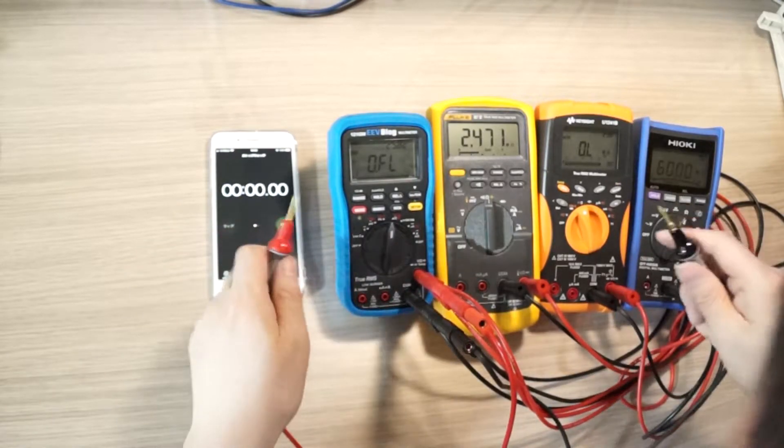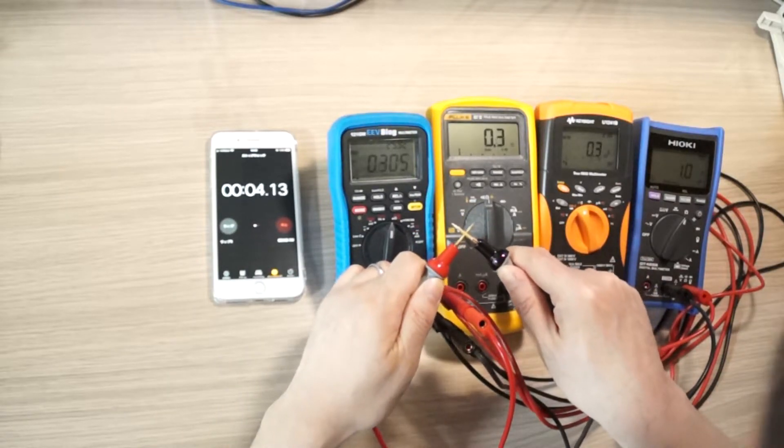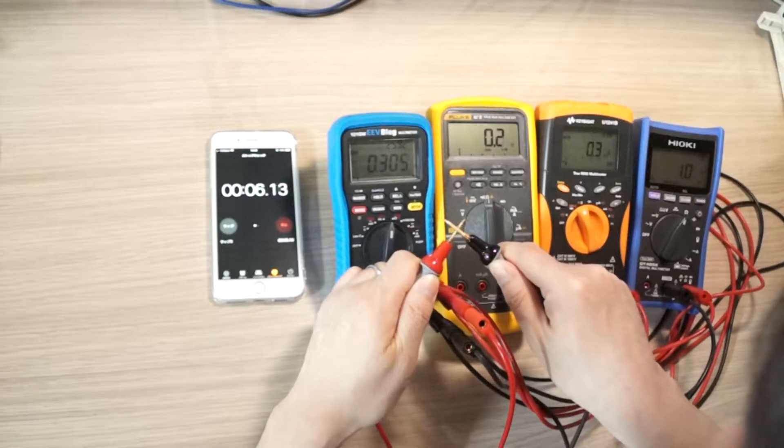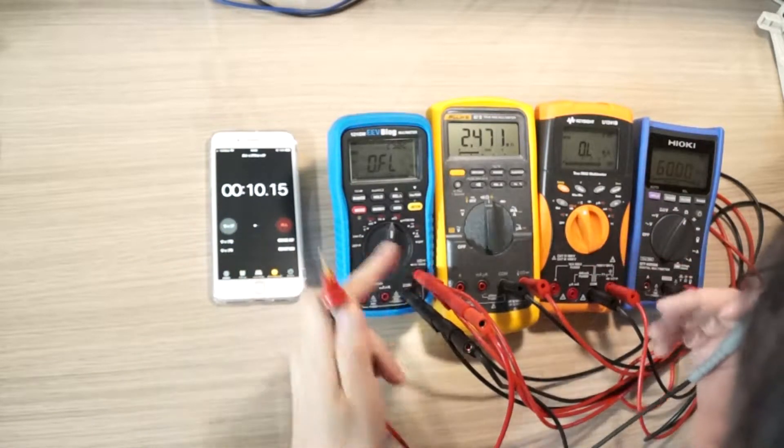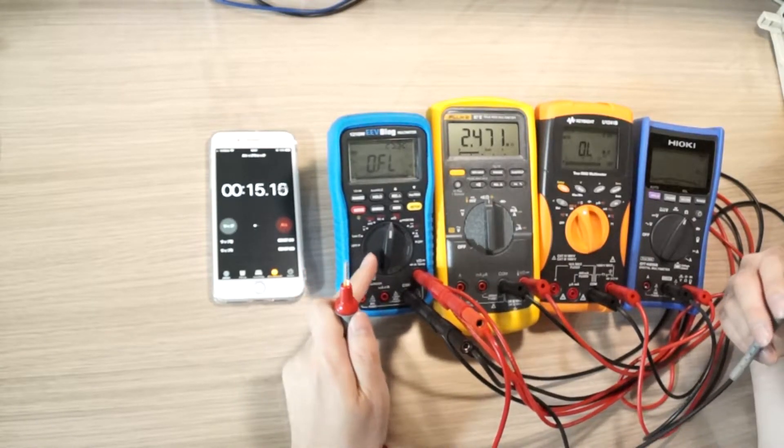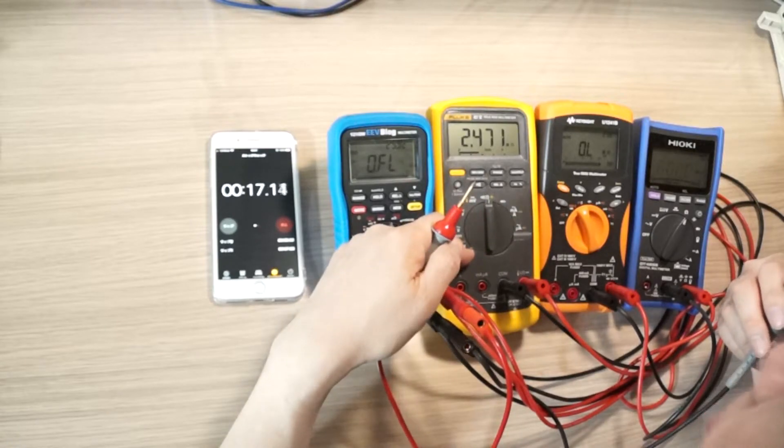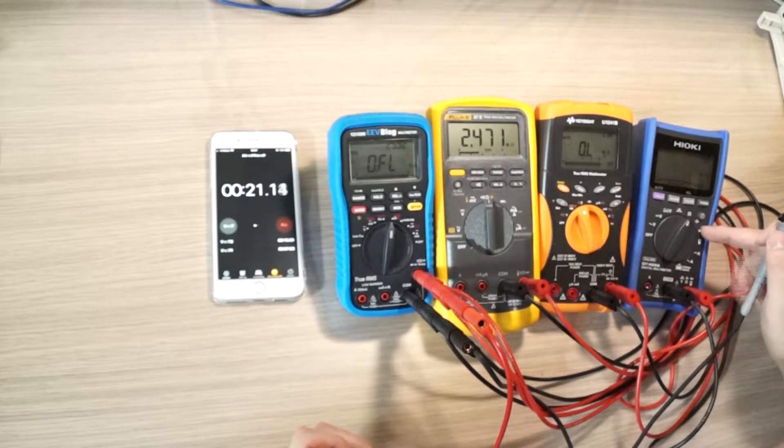So if I compare all the others, yeah, all the others are less than one second, but this is not a fair comparison. This is 50,000 count, always 50,000 count multimeter. This is 6,000, this is 10,000, and this is 6,000.